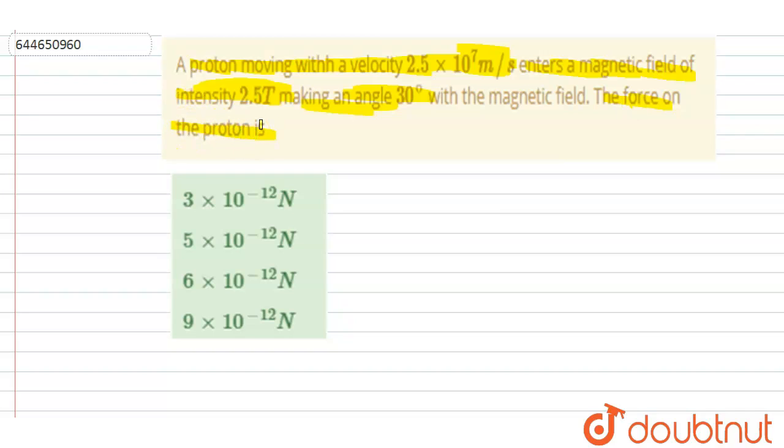So we know that in case of a charge moving in a magnetic field, the magnetic force vector equals charge on the particle times velocity vector cross magnetic field vector. And if I talk about the magnitude, it is q v B sine theta.